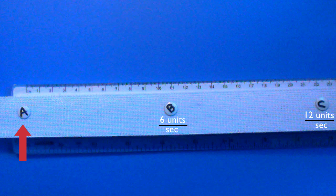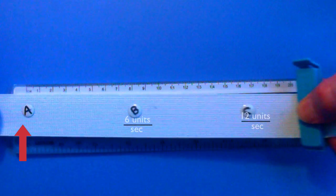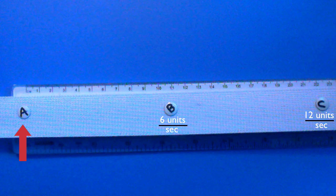In an evenly expanding universe, galaxy C, being twice as far, necessarily travels twice as fast, from the point of view of galaxy A.